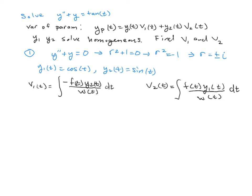We need to find the Wronskian to set up these integrals. The Wronskian is a 2×2 determinant with y1 and y2 in the top row—cos(t) and sin(t)—and their first derivatives in the second row.